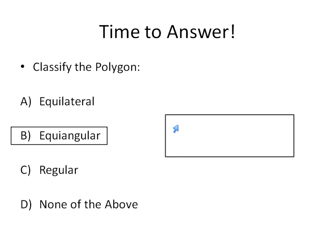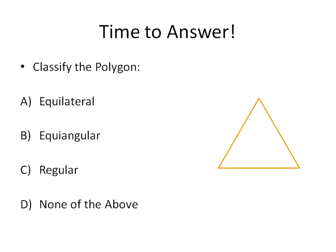Let's look at this triangle next. Is it equilateral, equiangular, regular, or none of the above? This one is a regular triangle. It has equal angle measurements — all three angles are congruent — and it has equal side lengths, all the same measurement. That makes it both equilateral and equiangular, and the way we say that is that it is a regular triangle.